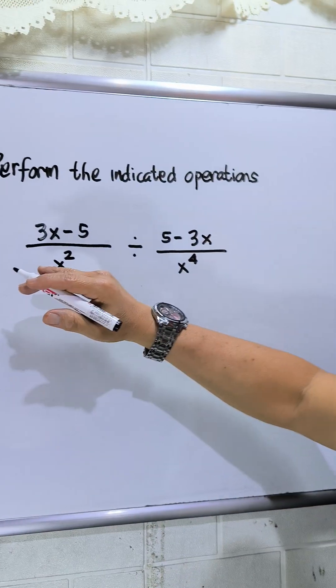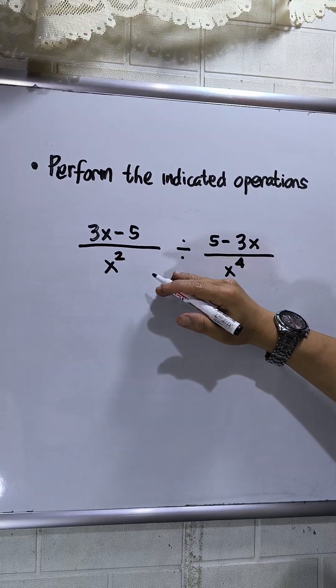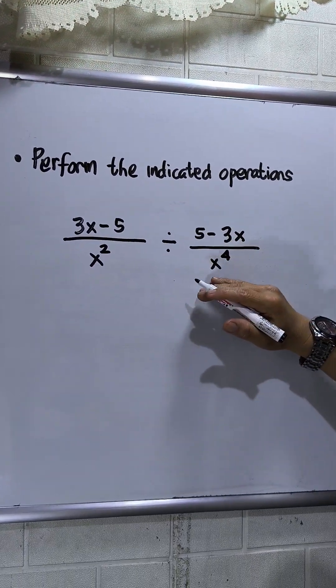So I have here, 3x minus 5 over x squared is divided by 5 minus 3x over x to the 4th.